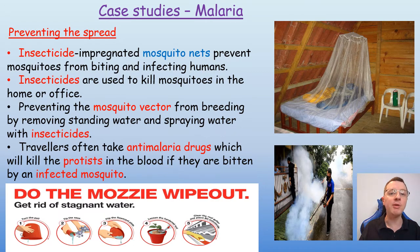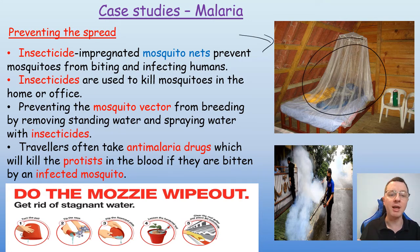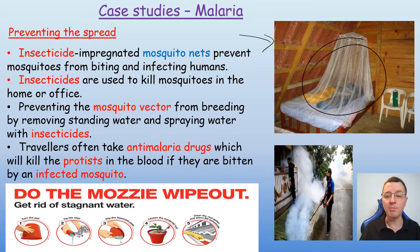So how can we prevent the spread of malaria? The most common thing to use are mosquito nets, which will be impregnated with an insecticide. Insecticides kill insects — in this case mosquitoes — and they will physically prevent the mosquitoes from biting and therefore infecting a human.